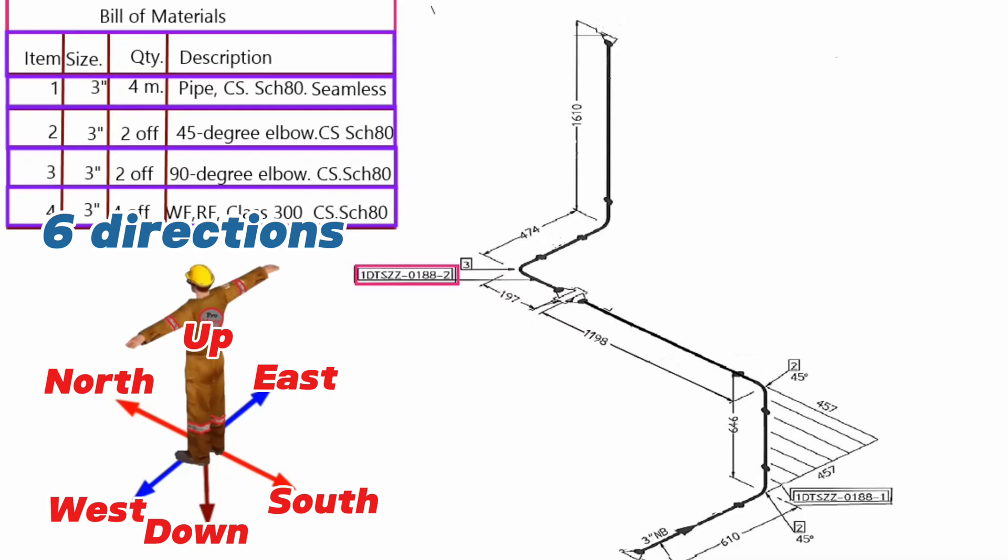We will start to read this pipe drawing from this point. The pipeline starts from this flange and extends eastwards. At this point, the pipeline first continues eastward with the dashed lines, then turns north at a 45-degree elbow angle with the dashed lines.